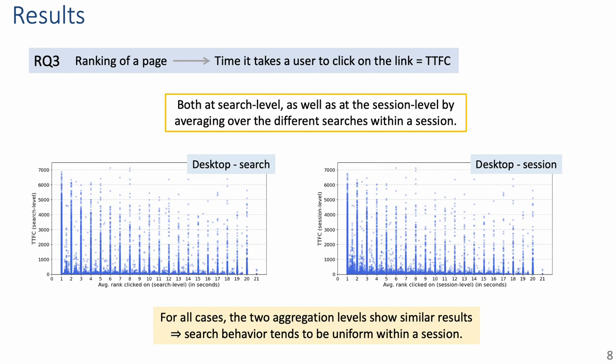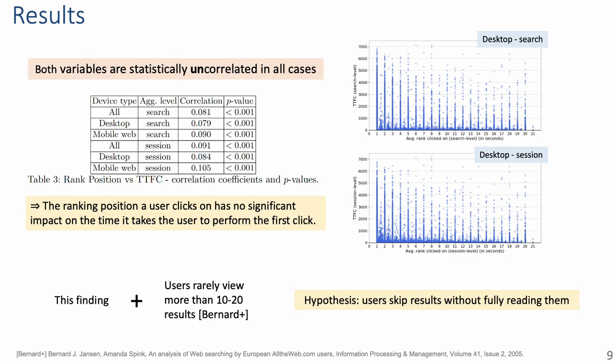Regarding the relation between the ranking of a page and the time to first click, we analyze this both at the search level and also at the session level, by averaging over the different searches within a session. What you can see on the charts is that the variables are uncorrelated and that the two aggregation levels show similar results, meaning that the search behavior tends to be uniform within a session. All the correlation coefficients confirm the uncorrelation, which implies that in this context, the ranking has no significant impact on the time it takes a user to click on a result.